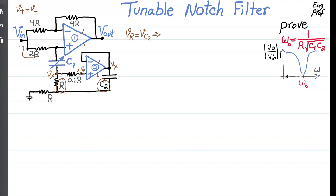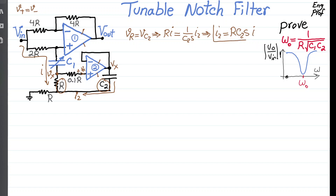Because the voltage drop across resistor R equals the voltage drop across capacitor C2, if there is a current I flowing through R and a current I2 flowing through C2, then in the S-domain: Vr = R·I and Vc2 = (1/C2S)·I2. Therefore I2 = R·C2·S·I. This is important — let's keep this as Equation 1.